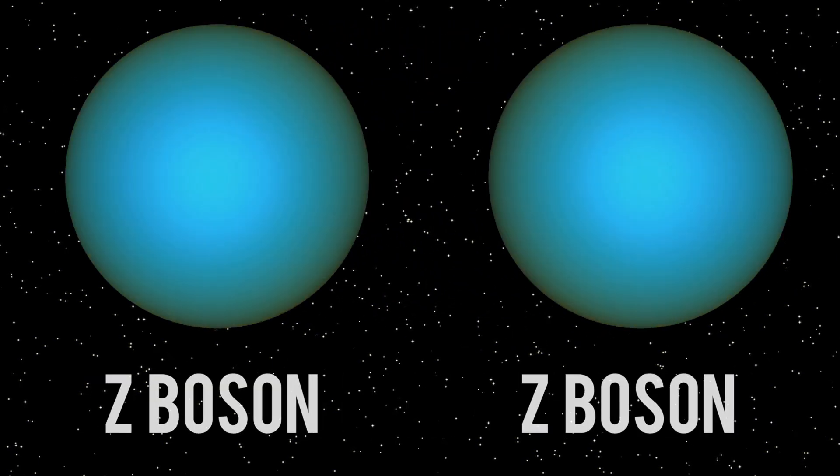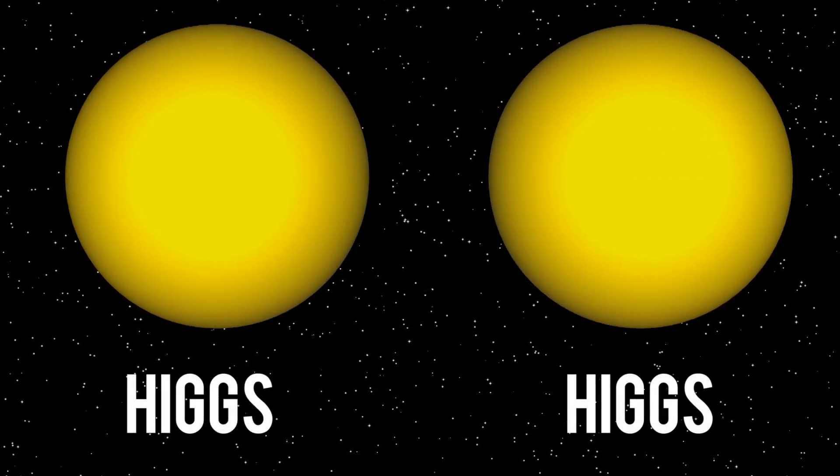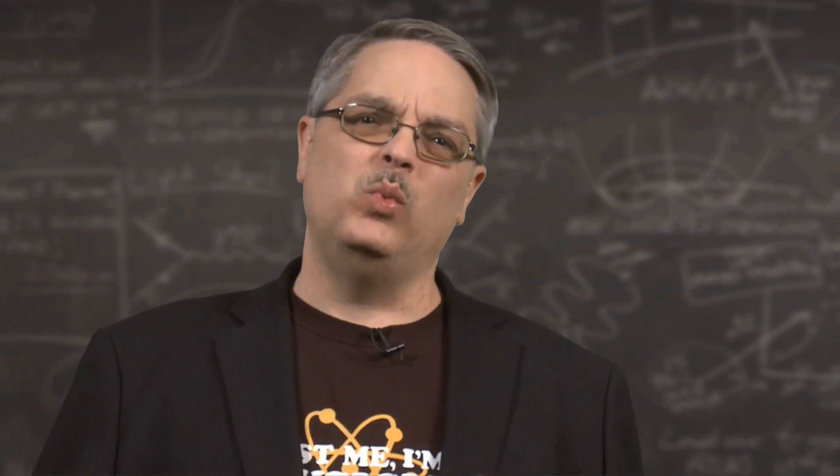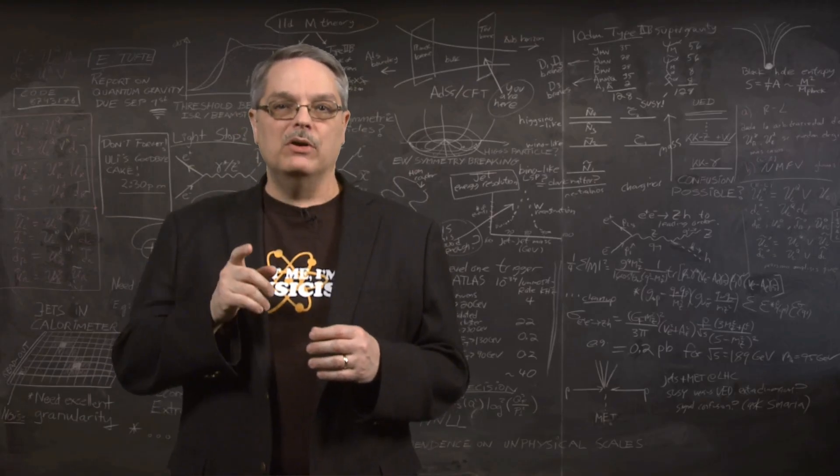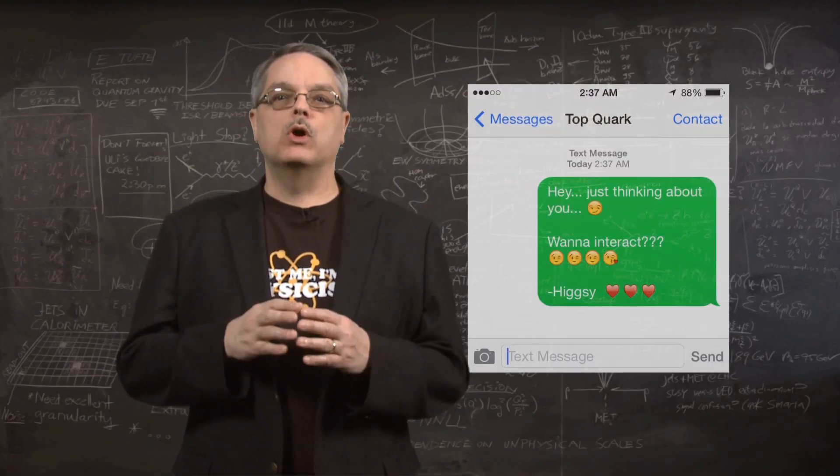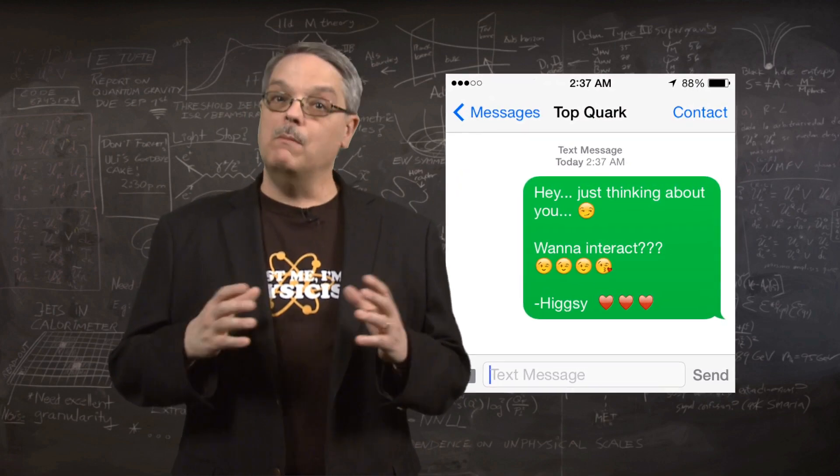This weird changing of identity is not unique to Higgs bosons—all subatomic particles are quantum chameleons—but we'll just talk about the Higgs boson for now. Remember that the Higgs field interacts more with some particles than others. That's why some particles have more mass than others. This means that it has favorites when it fluctuates.